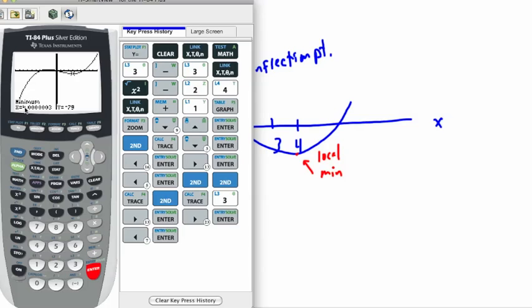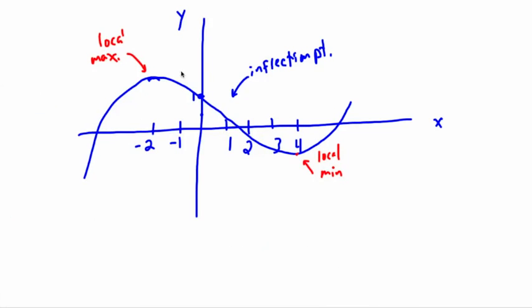It tells me x is 4 and y is minus 79. So that also worked. See? x was 4, y was minus 79.